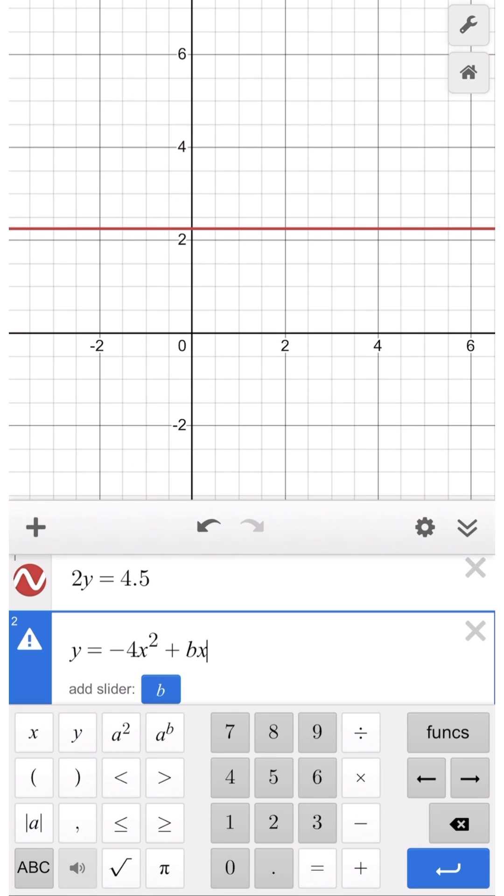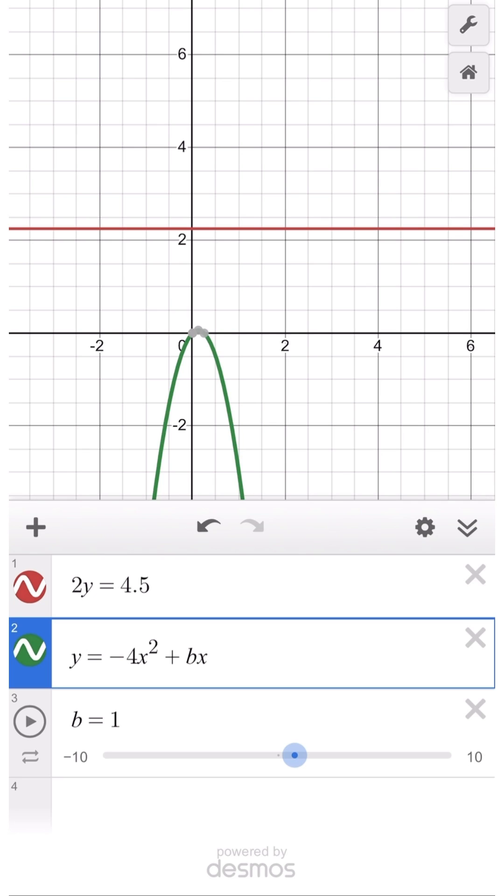And then b becomes a slider, and we can change the value of b and observe the parabola changing. We want the value that leads to one intersection only, so this will be right there.